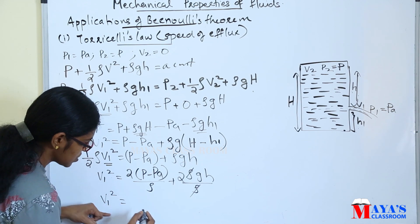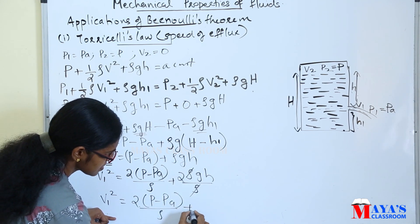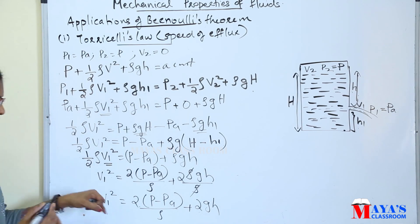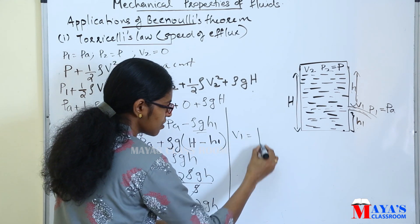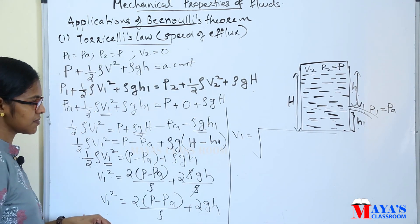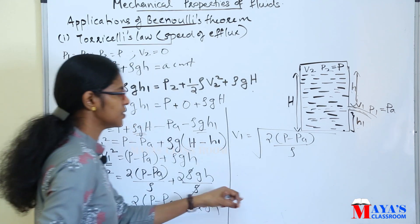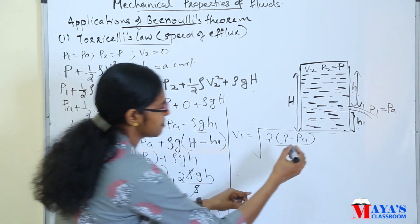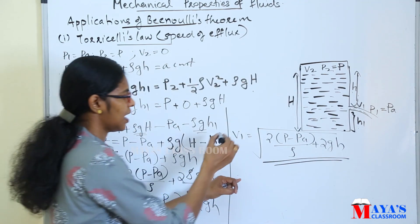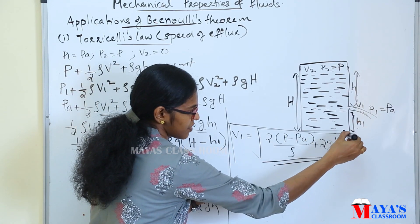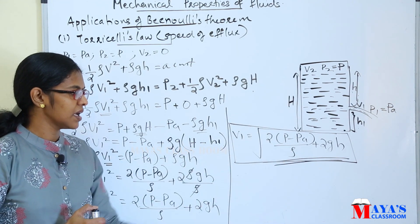V1 squared is equal to 2 into (P minus Pa) divided by rho, plus 2gH. Therefore, V1 is equal to the square root of [2(P − Pa)/ρ + 2gH]. This is the speed of efflux through a small orifice.